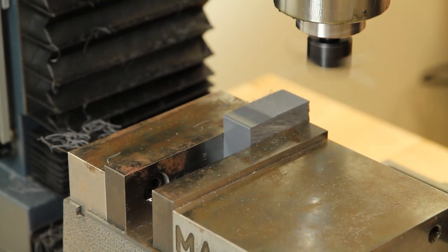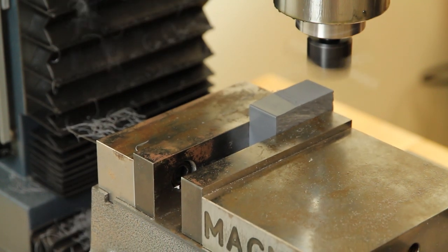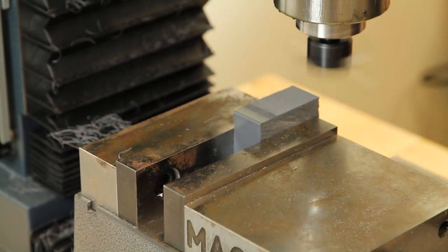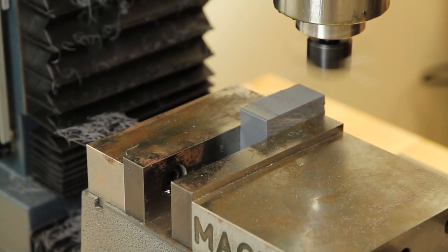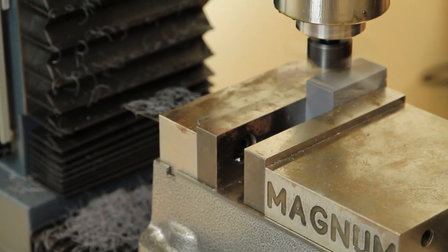Here are the sequence of cuts on the backside shown sped up four times. Each pass removes a little more material. In this time-lapse sequence, we're not showing the cutting tool being lowered after each pass.